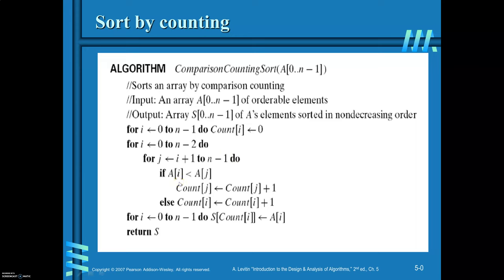If A[i] is greater than A[j], then the i-th element should come after the j-th element, so increment count[i]. Increment count[i] when A[i] is greater than A[j]. In the case where A[j] is greater than A[i], increment count[j]. With this logic you will get the count for every element of the array.